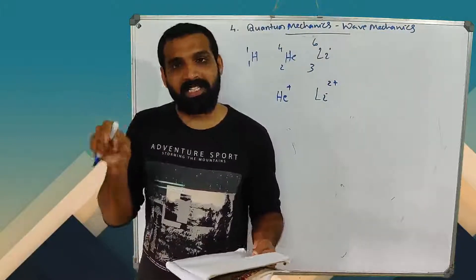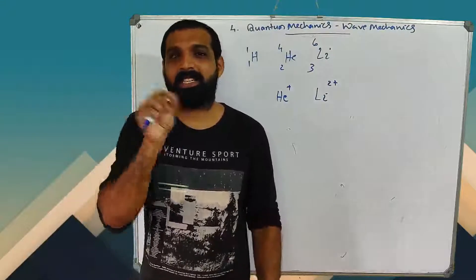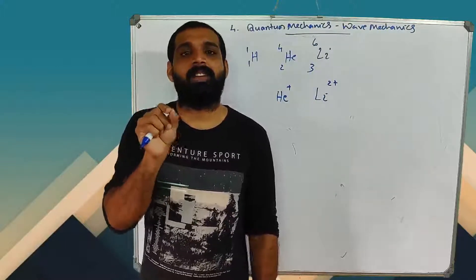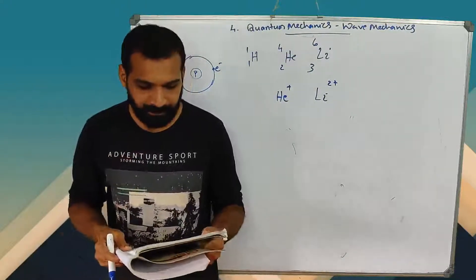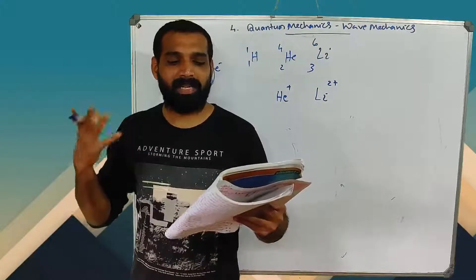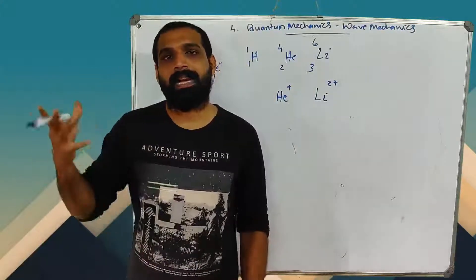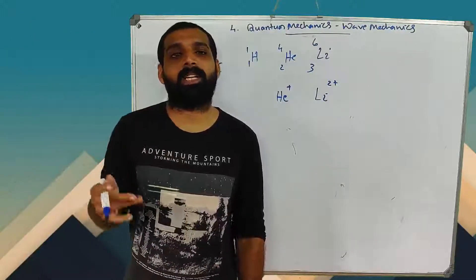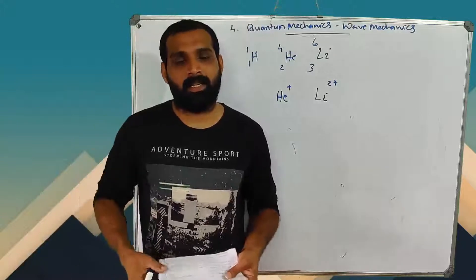The Bohr model could not account for the observation that many spectral lines actually consist of several small lines in between — spectral lines that actually consist of several lines whose wavelengths differ slightly. He couldn't explain how individual atoms interact to produce macroscopic matter with their physical and chemical properties.